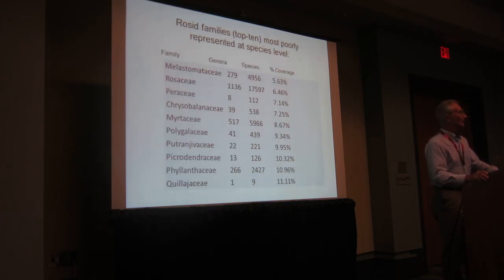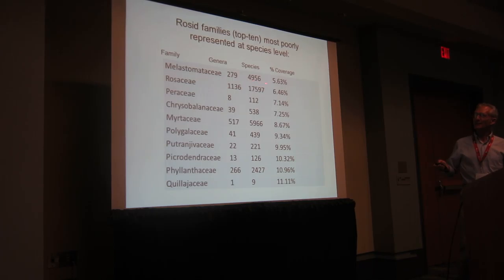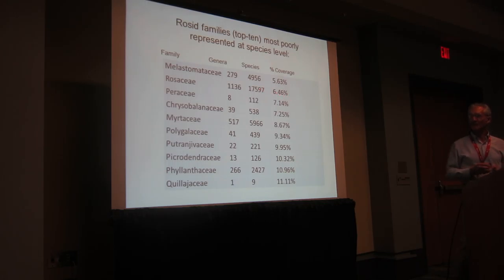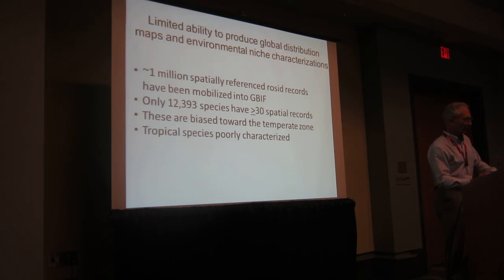You can see this even more profoundly at the species level. These are the rosid families' worst 10 sampled. The Melastomataceae: 5% coverage. The Rosaceae — a huge family — 6% coverage. The Myrtaceae. This is what we're dealing with in the rosids, and this is why global synthesis is so difficult at this level.